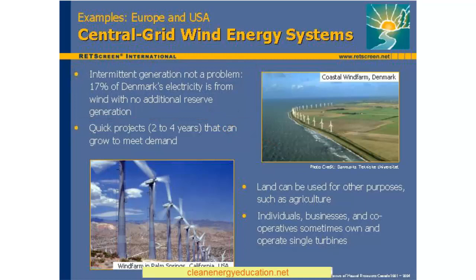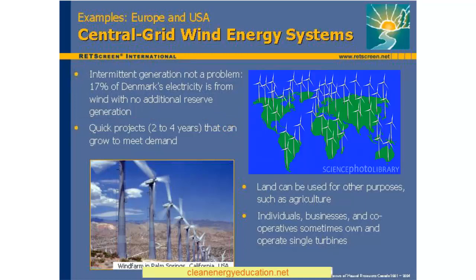Furthermore, when wind turbines are dispersed over a large geographic area, their net output to the grid tends to change less rapidly, since winds in one area may be dying down as winds in another are picking up.